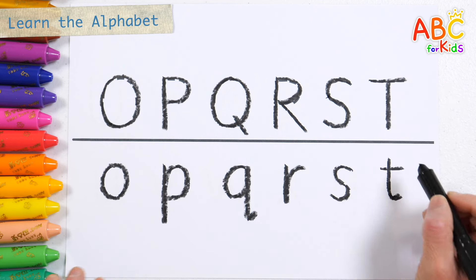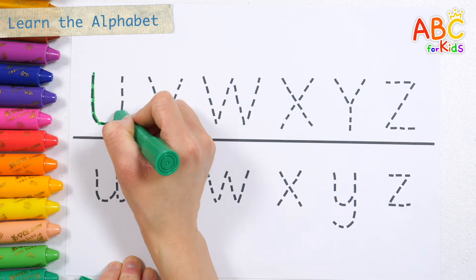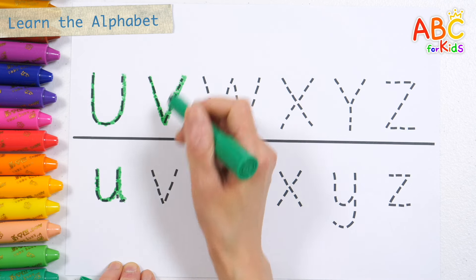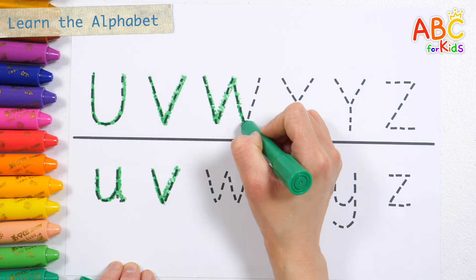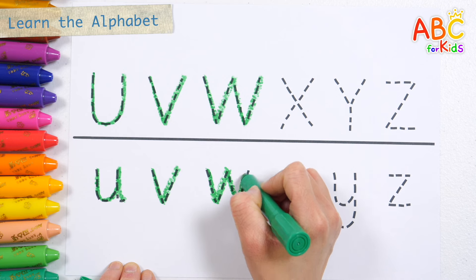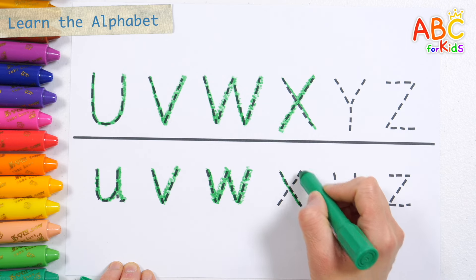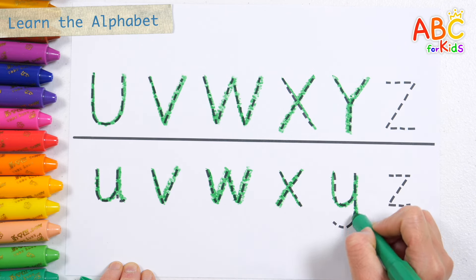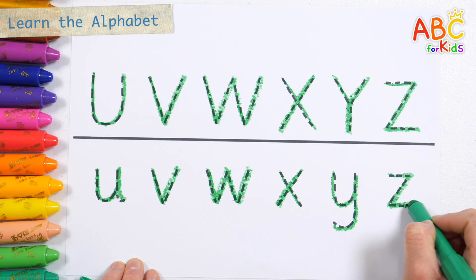T. Write the text in green. Uppercase U, lowercase U, V, W, X, Y, Y, Z.